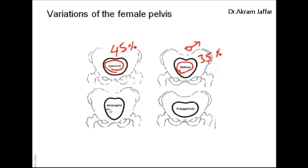Another variation is called the anthropoid pelvis, which is long and narrow and more commonly present in Black females. The anteroposterior diameter of the inlet is much longer than the transverse diameter, and it is rare. The other rare type is the platypelloid or flat pelvis, which is shallow and flat — the anteroposterior diameter is narrow while the transverse diameter is very long.